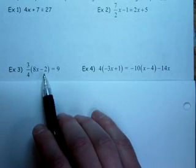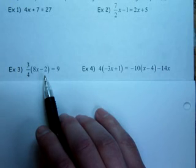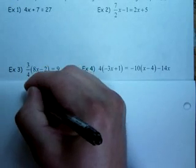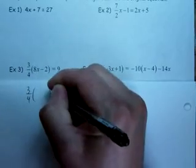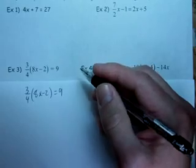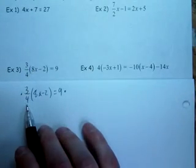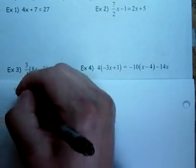So by distributing this fraction, you're going to keep a fraction in at least one place. My suggestion is, when you have this 3 fourths outside the parentheses, 8x minus 2, and it's equal to 9, why don't we try multiplying both sides by the reciprocal of this fraction, which is 4 thirds.